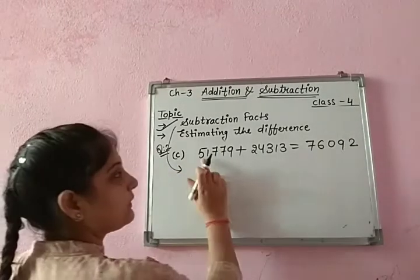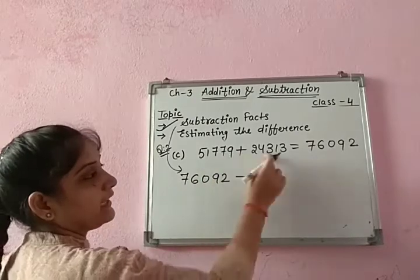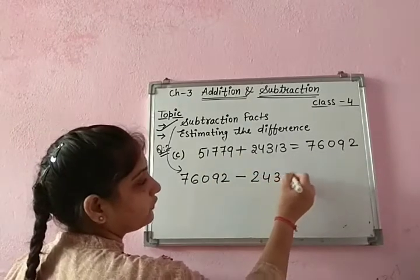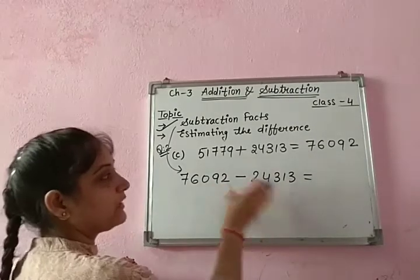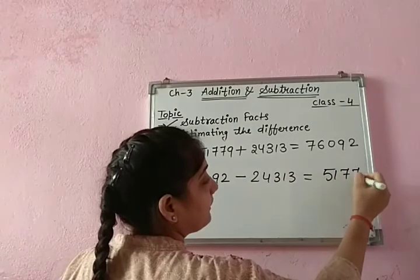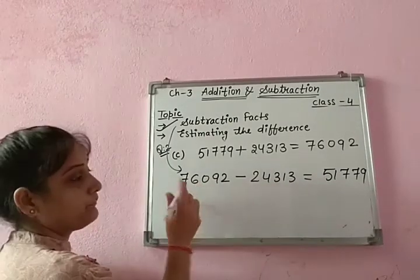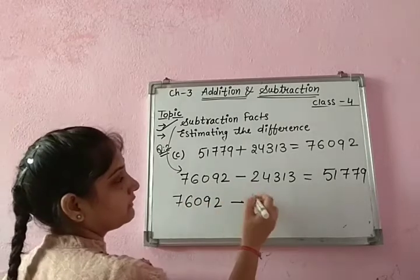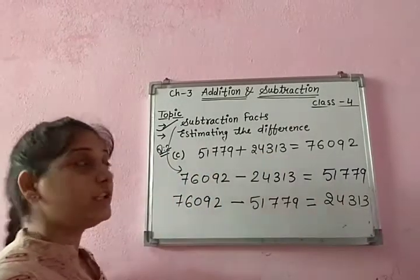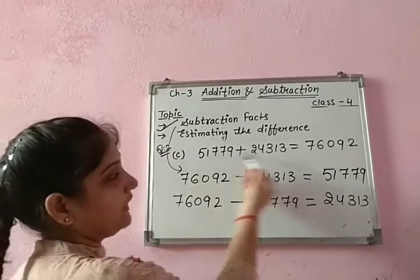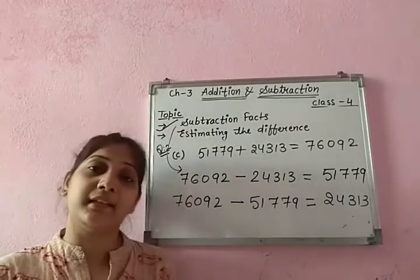For the second example: 24,330 plus 76,092. Now I am writing subtraction facts. Out of these three numbers, the sum is the bigger one. From this bigger number, I can subtract any one of the smaller numbers. Children, using only these three numbers, from the bigger, if you subtract the smaller, you will get the other smaller number. This is how we write subtraction facts.